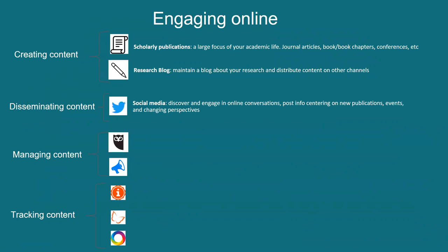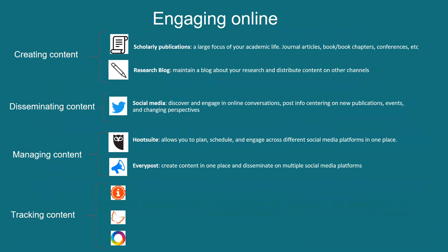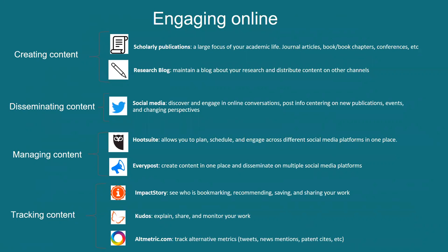When we're disseminating, you might want to use something like Twitter to tell people you've got a new blog post. If it all becomes a bit much, there are tools to help you manage your online content — I used to use Hootsuite, though I now find it a little expensive, and I'm looking into Every Post. You also want to know if your online presence is having any impact. You could look at something like Impact Story, Kudos or Altmetric to see how your online presence is tracking.